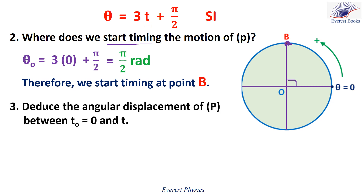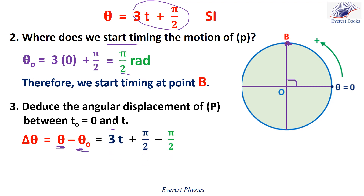Part 3: Deduce the angular displacement of P between time 0 and time T. The angular displacement equals delta theta, which is the final theta minus the initial theta. The final theta at time T is 3T plus π over 2, and the initial theta is π over 2 radians. Substituting and simplifying: delta theta equals 3T, expressed in SI units.